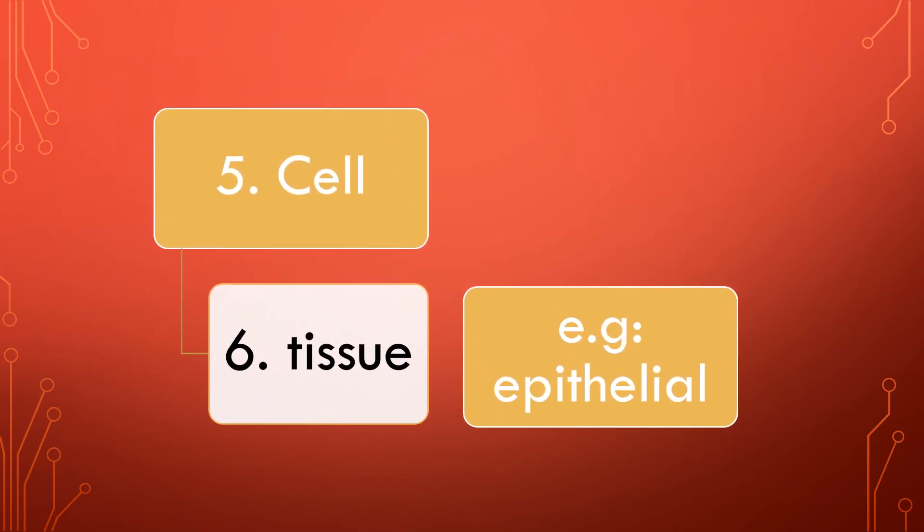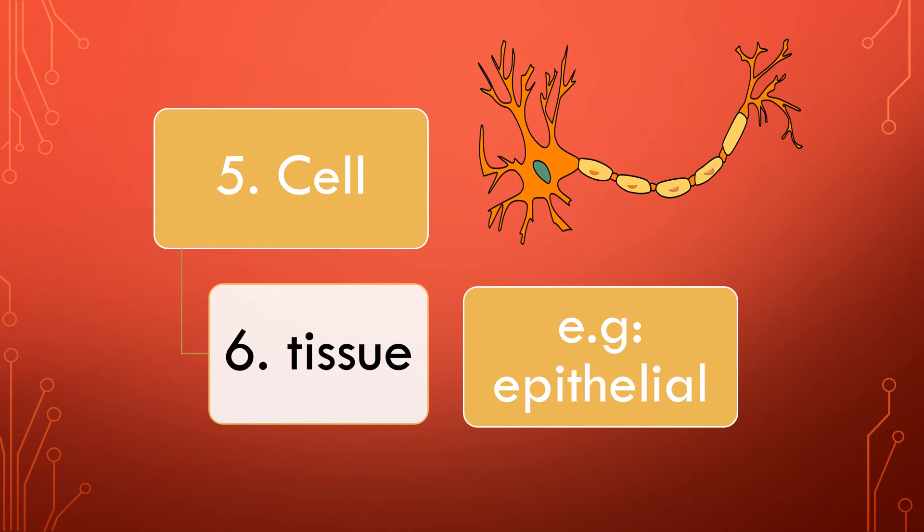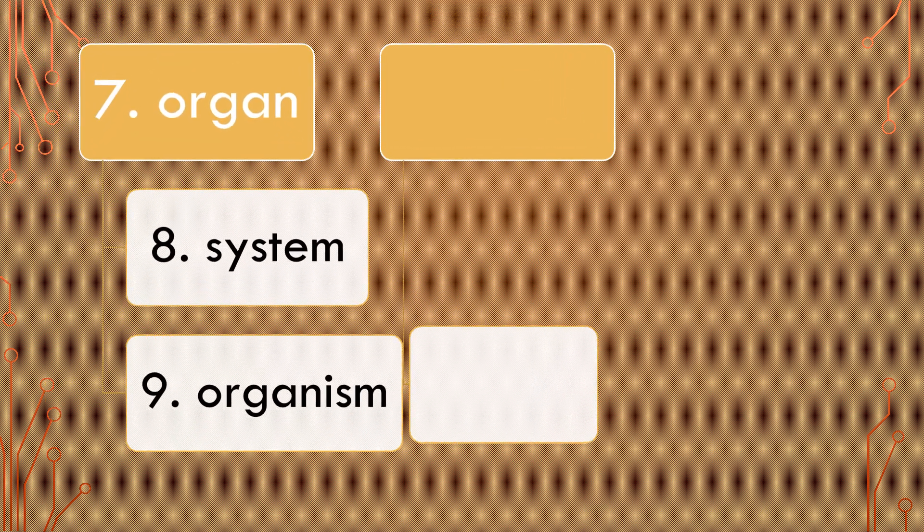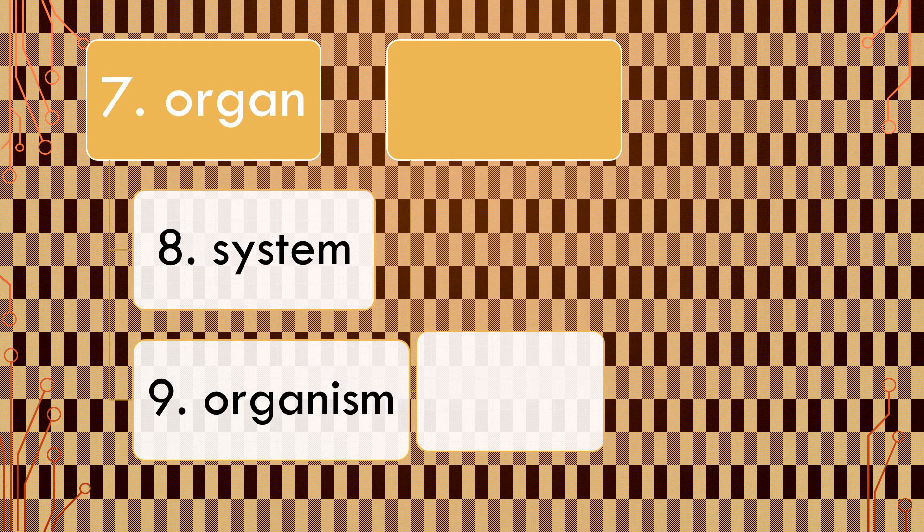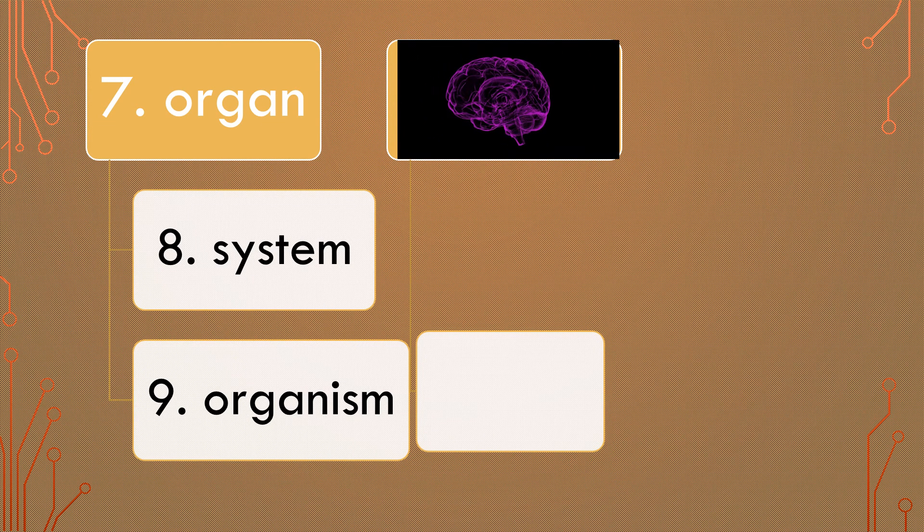The fifth organizational level of physiology is a cell. There are so many types of cells, like nervous cells - this neuron. There are so many types of tissue, example: epithelial tissue. Another organizational level, which is seventh, is the organ. There are so many organs like this brain.